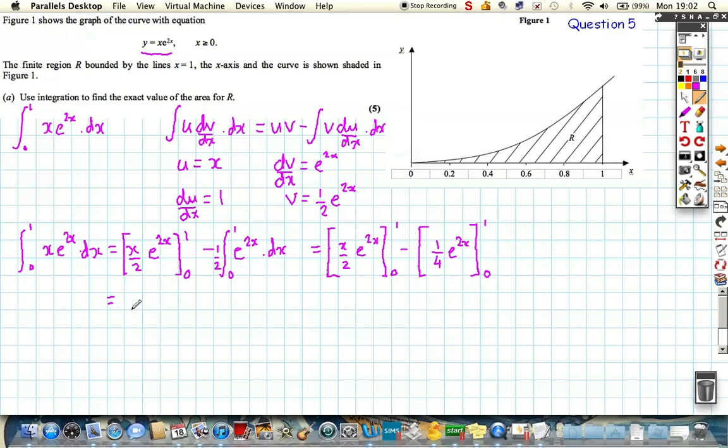So if we come back over here, this first bit gives us, if we substitute 1 in, we get half e to the 2, and when we substitute 0 in, e to the 2 times 0 is 0, e to the 0 is 1, so 0 gives us just 0 for that, minus 0. I'm going to put this in brackets so we don't avoid any mistakes with negatives. 1 into this expression here gives us 1 quarter e to the 2, and then we're subtracting, 2 times 0 is 0, e to the 0 is 1, so that's just a quarter.